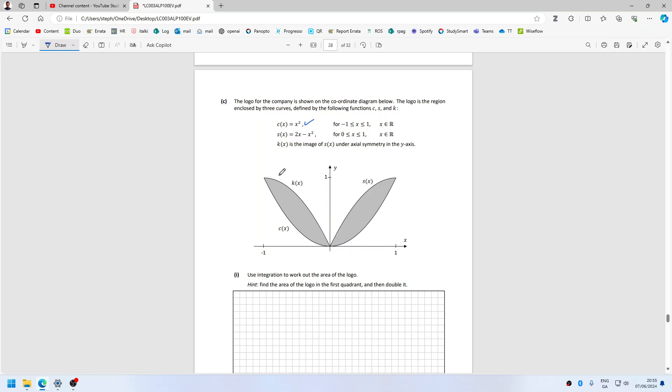K is the image of S under reflection. Ah, so it's symmetric, so it's just this area times 2. That's S, and that's C, so the area...